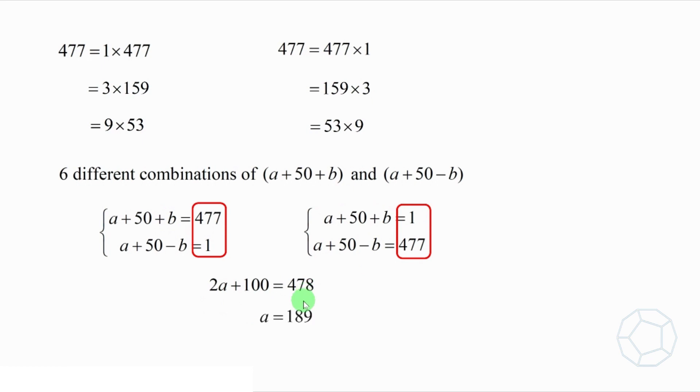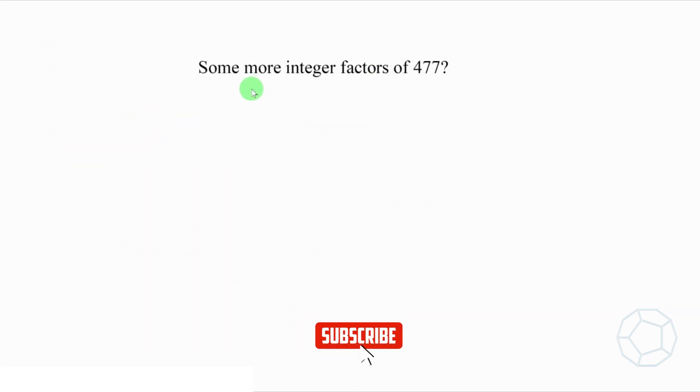Solving this simple equation, we get a equals 189. Therefore, we only have to look at the three combinations. But still, we miss out some integer factors of 477. It is because we have to consider the negative integer factors as well.